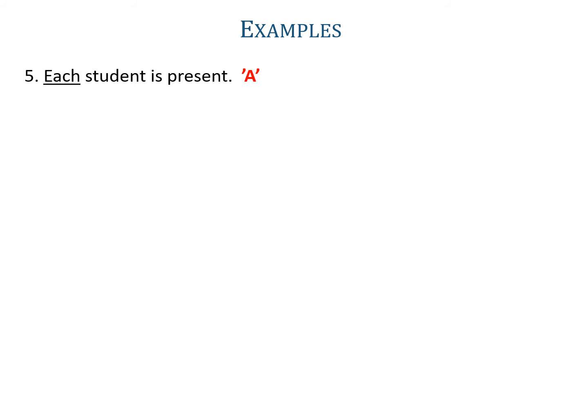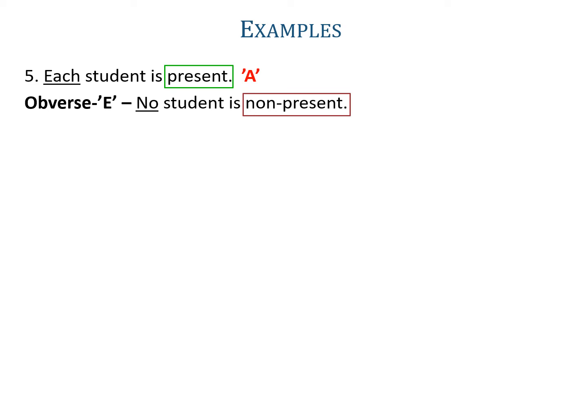Example five: 'If each student is present.' In this proposition the word each is used, so it is an A-proposition. Then its obverse will be E, and the predicate of this proposition is present. Its complementary will be non-present. When writing the obverse of A, that is E, you should write it in a singular term, since it is given as a singular term in the A-proposition. So the obverse is 'no student is non-present'.